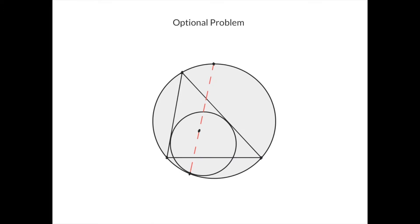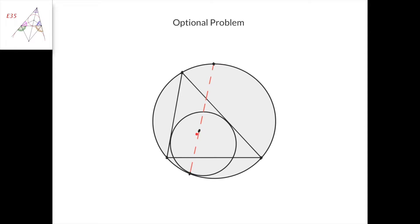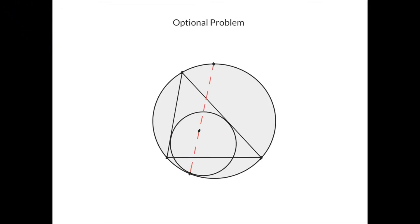Here's the optional problem. We have a triangle, this is its circumcircle, and this is one of its mixtilinear incircles which touches the circumcircle at this point. This point here is the incenter of the triangle, and this point here is the midpoint of this arc — or in other words, the intersection of the perpendicular bisector of this side of the triangle with the circumcircle. We need to prove that this point of tangency, this incenter, and this midpoint of the arc lie on a straight line.